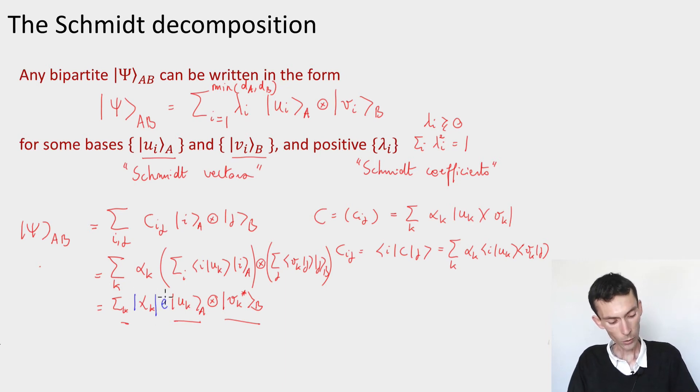And here I can write what the phase was and call this vector the Schmidt vector for the A system, and this the Schmidt vector for the B system. If the uk's were a basis, the e to the i theta k's are also a basis. It doesn't make any difference. So there we are. We've written the state psi in a form that exactly gives us the Schmidt decomposition.